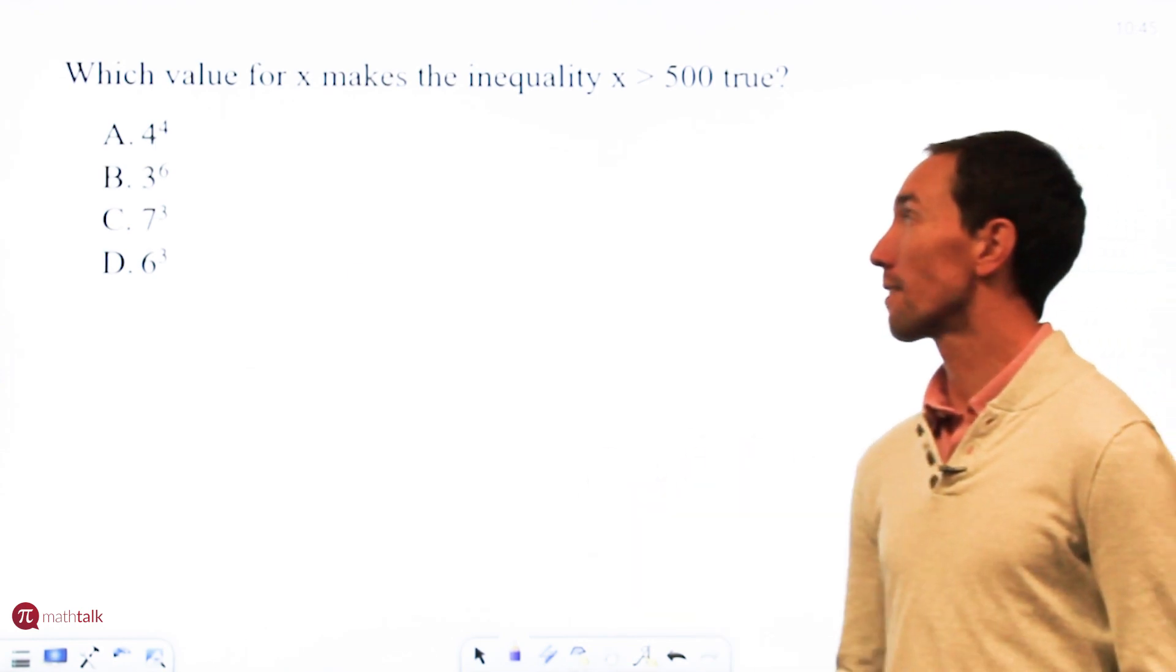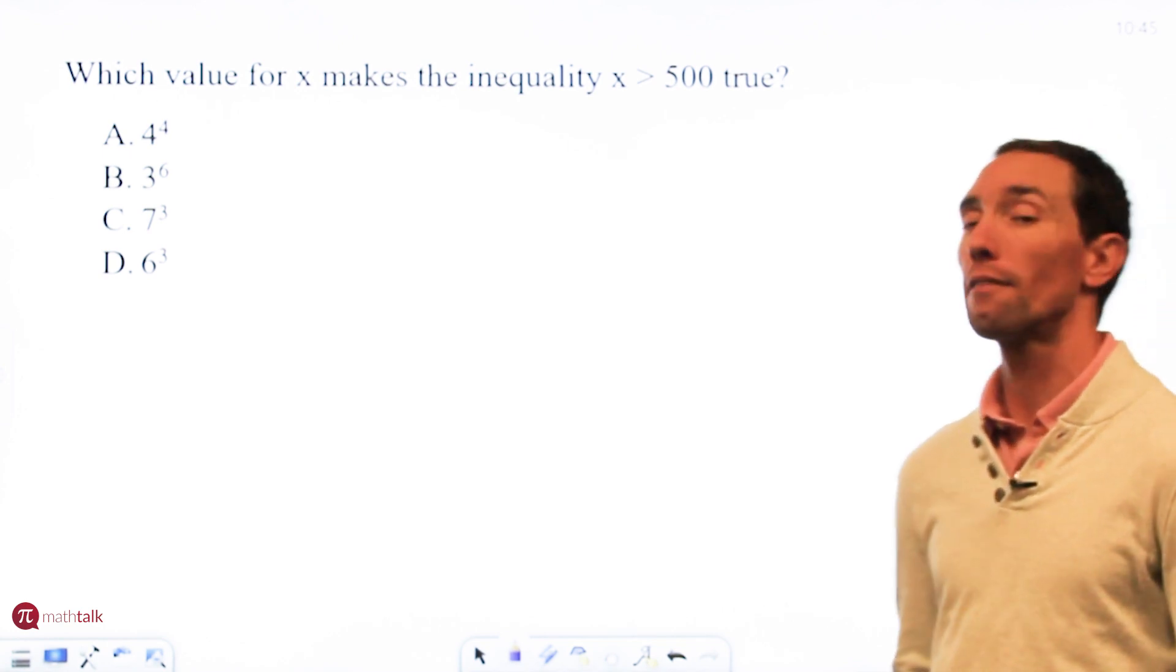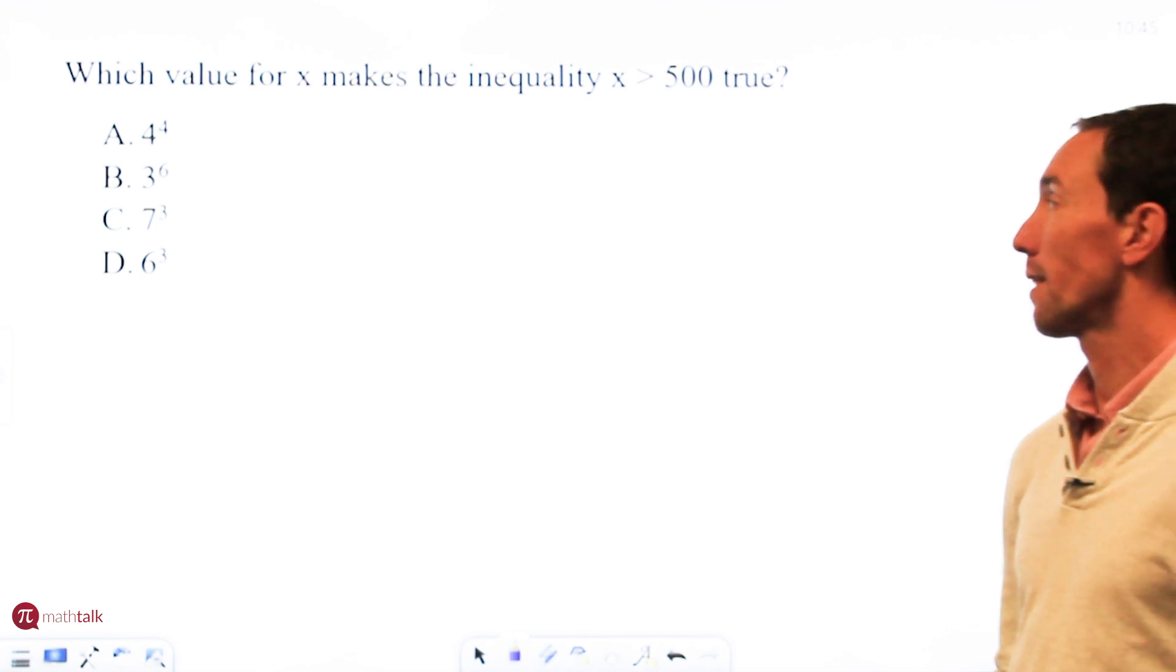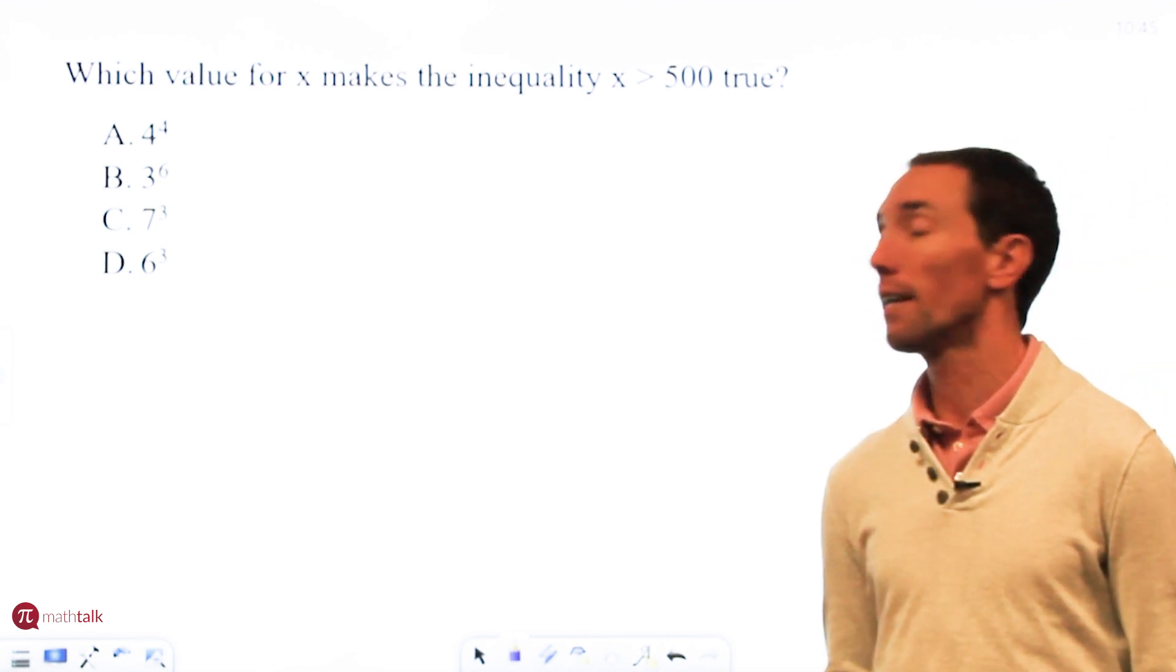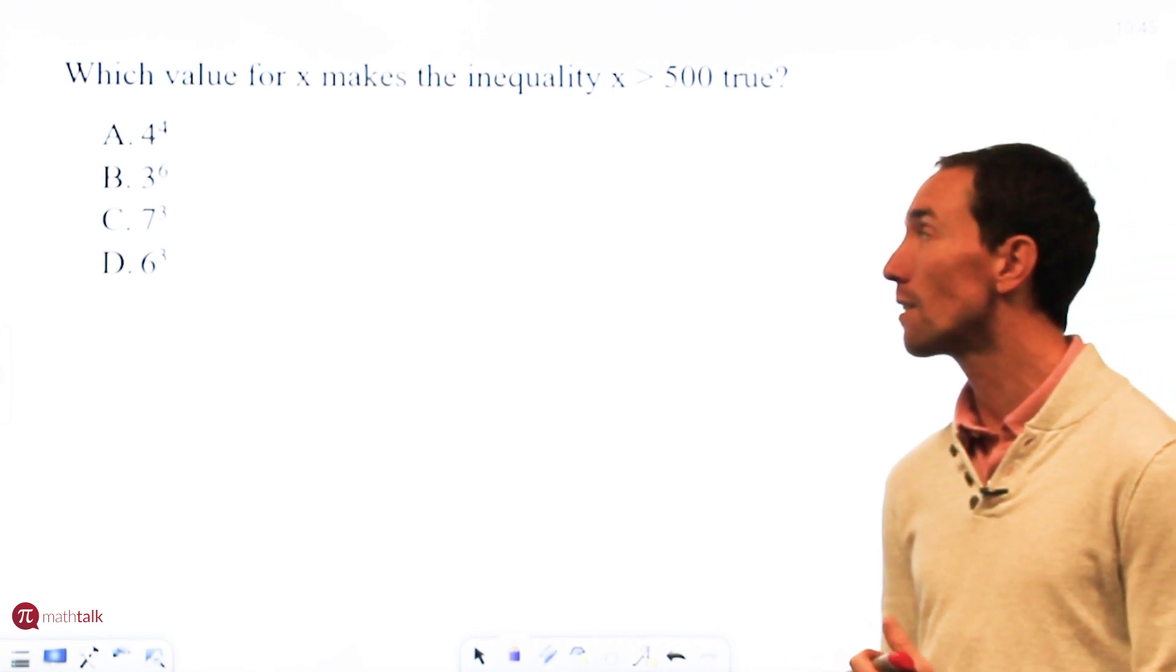So I have a question right here. It says, which value for x makes the inequality x > 500 true? And they give you four different options to choose from. This may or may not be on the non-calculator section, but with the calculator it is obviously a lot easier.